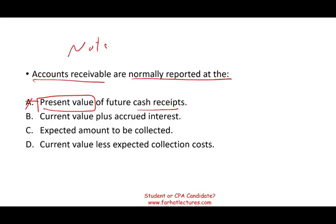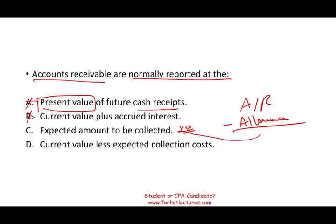Accounts receivable also do not accrue interest — notes accrue interest, not accounts receivable. Accounts receivable are reported at the expected amount to be collected. Simply put, you take accounts receivable and subtract the allowance to get the expected collectible amount. For example, if you have $10,000 in accounts receivable and the allowance is $500, you expect to collect $9,500. That is how accounts receivable are normally reported — at the expected amount to be collected.